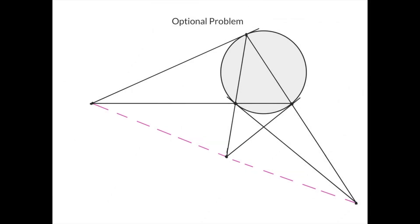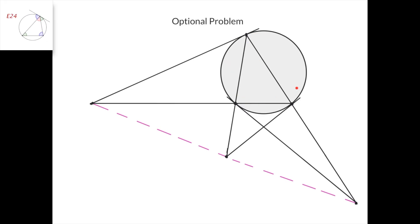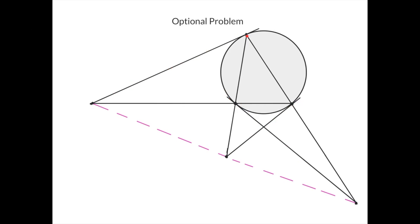The first optional problem: we have a triangle with its circumcircle. At each vertex, we draw the tangent line to the circle, and intersect each tangent line with the opposite side of the triangle, giving three intersection points. We need to prove these three points are collinear. The solution: treat each vertex as two coincident points. Label the vertex on side AB as both A1 and B2 coinciding, the vertex on side BC as C2 and B1 coinciding, and the vertex on side CA as C1 and A2 coinciding.